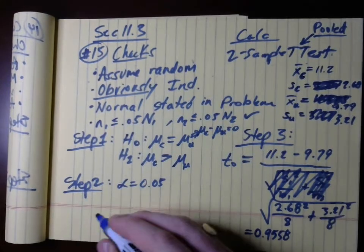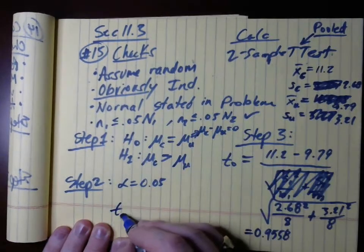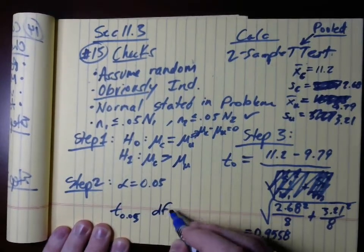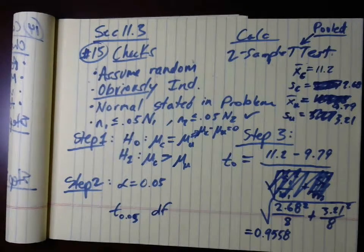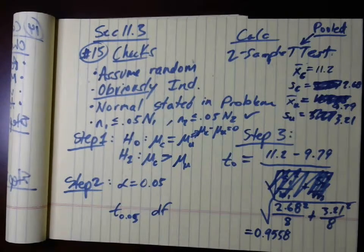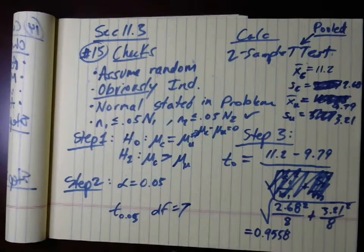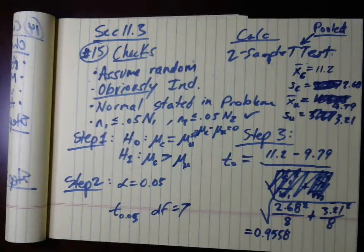Here's the test statistic, and for the critical value: this is a right-tail test with alpha = 0.05. We look up T_{0.05} at degrees of freedom equal to the minimum of (n₁ − 1) and (n₂ − 1). We have n₁ = 8 and n₂ = 8, so the minimum sample size is 8, giving df = 7. If we had 30 and 20, we'd use 20 and df = 19 - always use the minimum. Looking up df = 7 with subscript 0.05 in the T-table gives a critical value of 1.895.